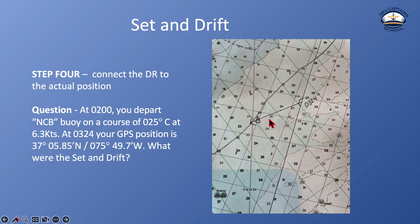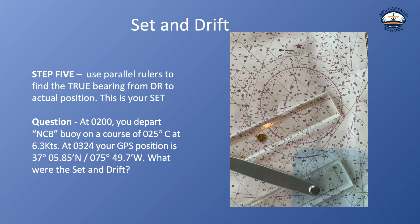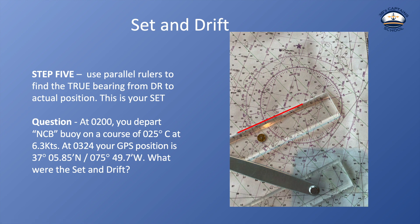That direction I was pushed is my set. So I draw a line from the 0324 dead reckoning position — where I should have been — right through where I actually am at 0324, and draw a little arrow showing the direction I was pushed. To measure that direction, I take my parallel rulers, line them up with this line, and move them over to the compass rose. Reading the outside ring gives me a true set of 246 degrees. The set is 246.